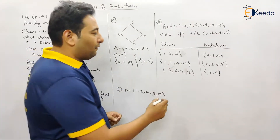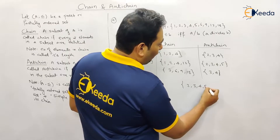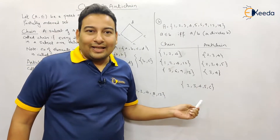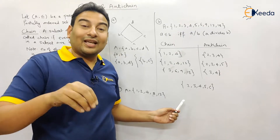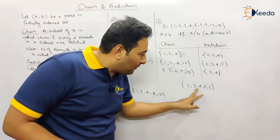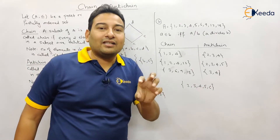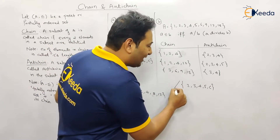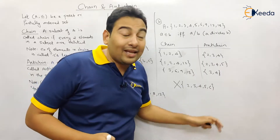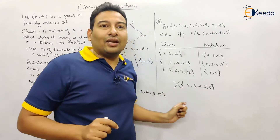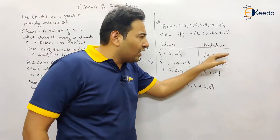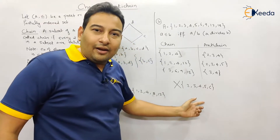Now consider the subset {2, 3, 4, 5, 6}. Is it a chain or antichain? If you pick 2 and 3 — they satisfy the criteria of antichain (not related). But if you pick 3 and 6 — they satisfy the criteria of chain (3 divides 6). So this is a mixed case: some pairs are related, some are not. Therefore this subset is neither a chain nor an antichain.